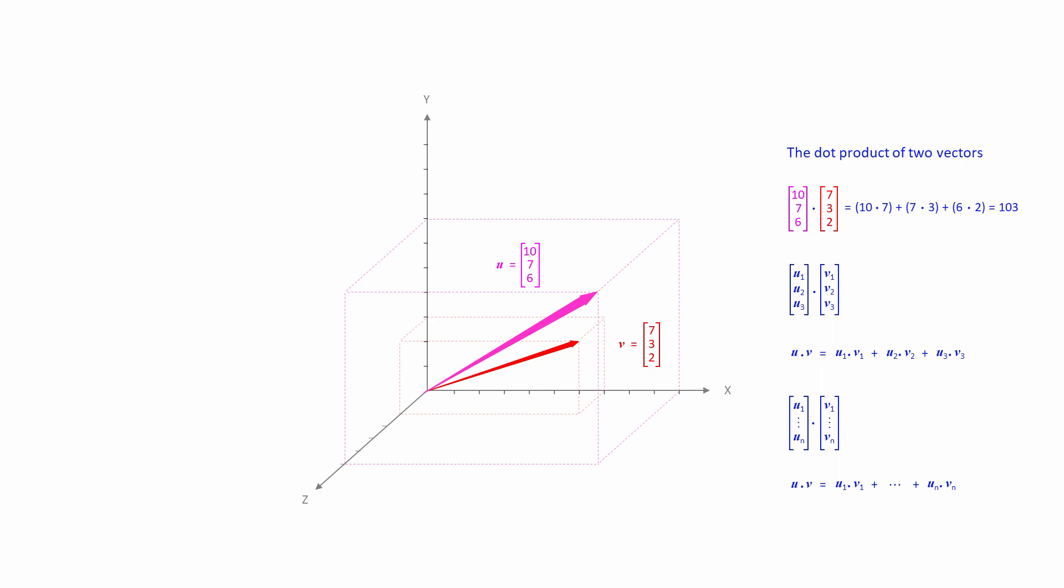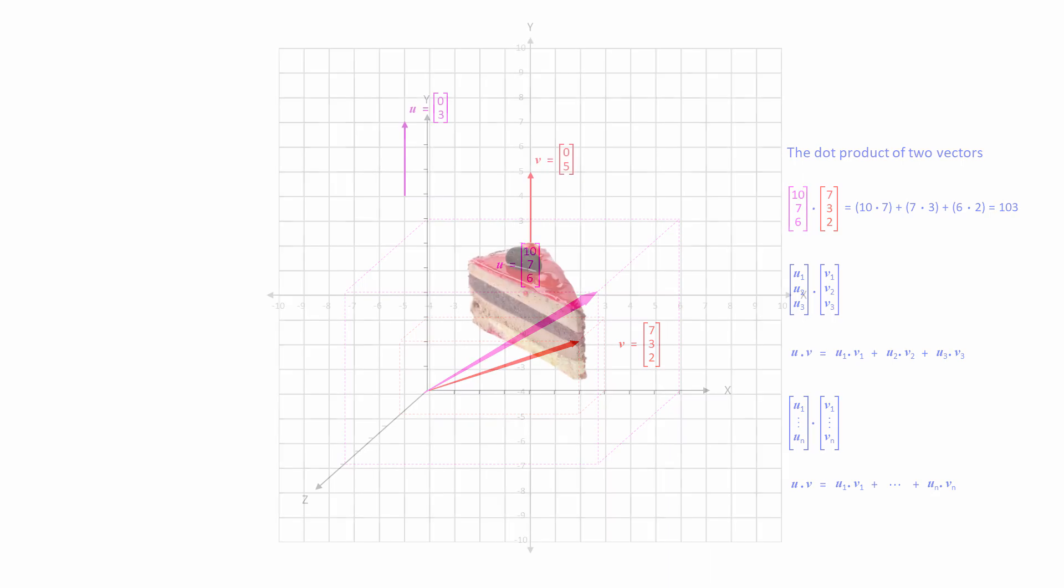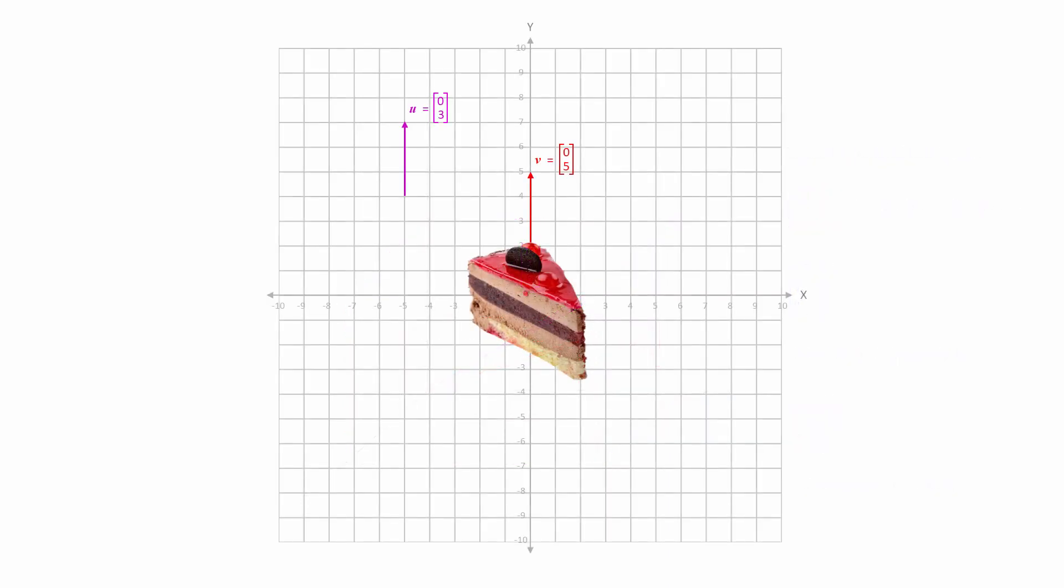Needless to say, to obtain the dot product of two vectors, they must have the same number of dimensions. So you can see, calculating the dot product of two vectors is a piece of cake. As long as you can multiply and add numbers together, all you have to do is follow a simple recipe. But you have to ask the question, why would you ever want to calculate the dot product of two vectors? What does the dot product actually tell us?